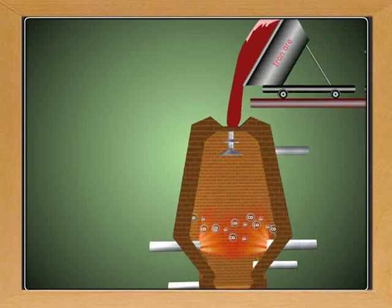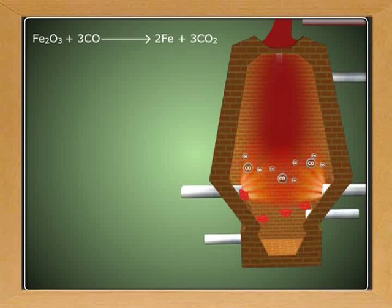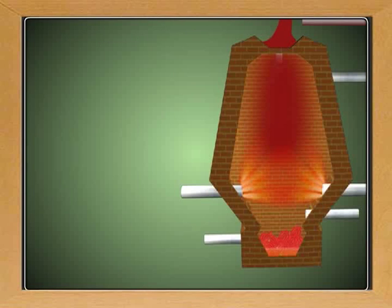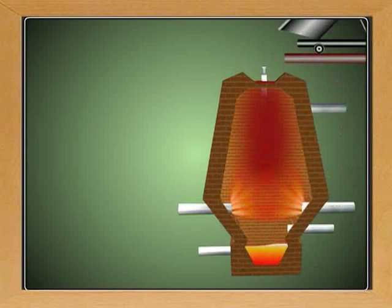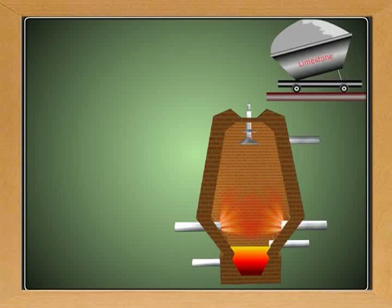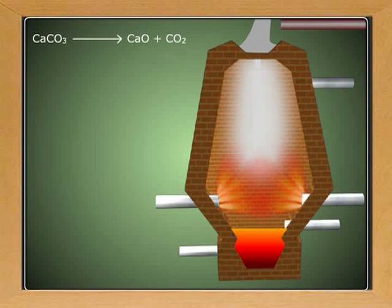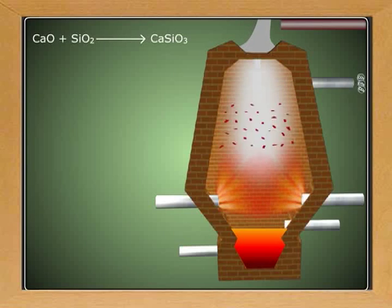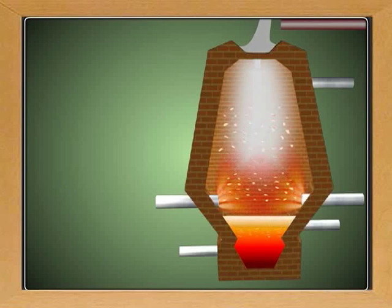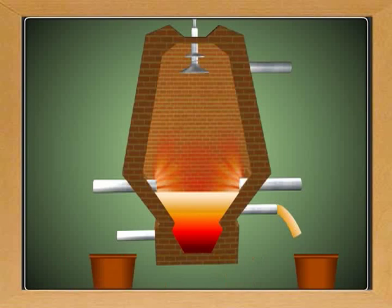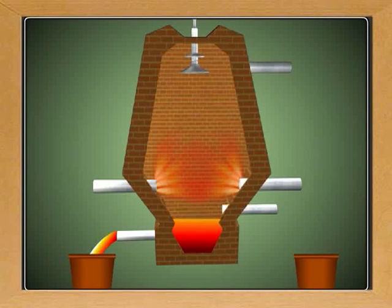Carbon monoxide reduces the iron ore into ferrous oxide and finally to iron. The formed iron is solid in state which converts to liquid and settles at the bottom. The limestone decomposes to lime and carbon dioxide. The lime combines with silica to form calcium silicate. Calcium silicate settles on the top of the molten iron. Slag is withdrawn from the outlet and molten iron is collected at the bottom.